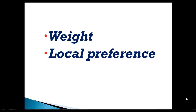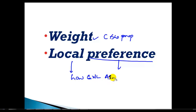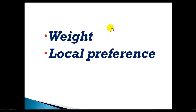In this video we will try to understand two major attributes used for path manipulation. The first one is weight, which is a Cisco proprietary attribute, whereas local preference is a well-known discretionary attribute. Both are generally used for path manipulation and they decide how to exit the AS.